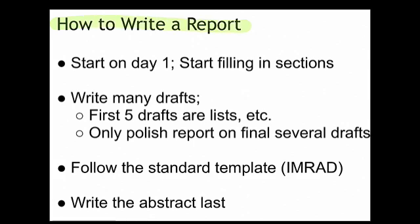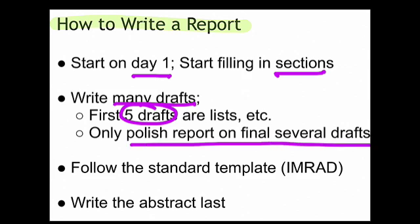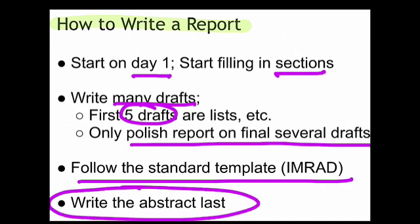Here's how to write a report. Start on day one — list out your main sections and start writing lists and ideas down. Use many, many drafts. Generally, the first five drafts are just lists, ideas, and sketches. I don't actually start writing prose until about draft six, and I only polish a report on the last few drafts. The early drafts — three, four, five — are all about thinking: what is it I really want to communicate? Get your thinking really clear before you write it up. Then follow the standard template, and always write the abstract last — it's the hardest because you need to be very concise for your reader.